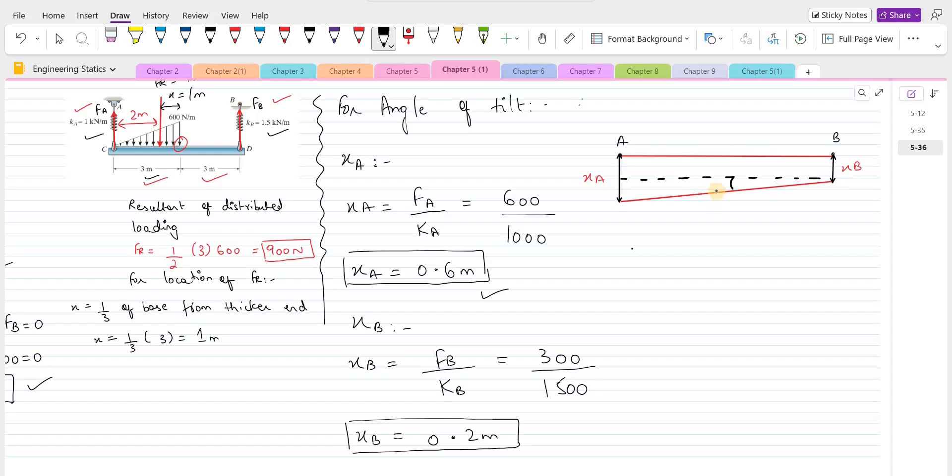So now this is the new position of the beam. This is the angle of tilt. Let's call this alpha. So alpha is the angle of tilt.